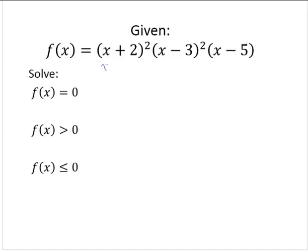If x plus 2 equals 0, that means x equals negative 2. If x minus 3 equals 0, x equals 3. And if x minus 5 equals 0, that means x equals 5. So our solution for f of x equals 0 is the set containing negative 2, 3, and 5.